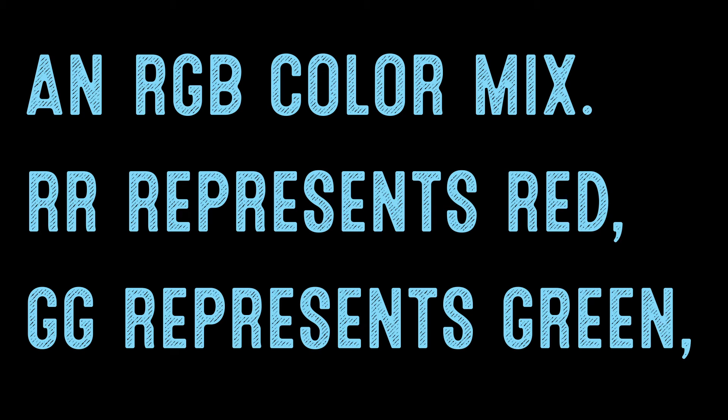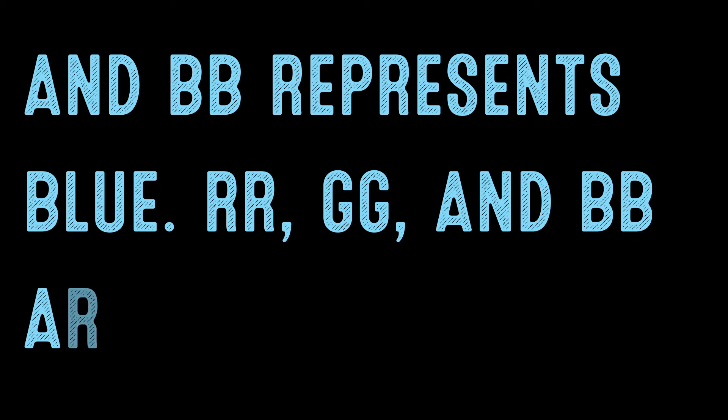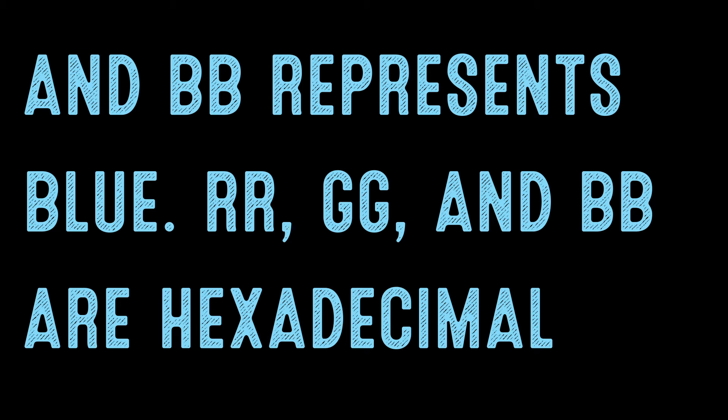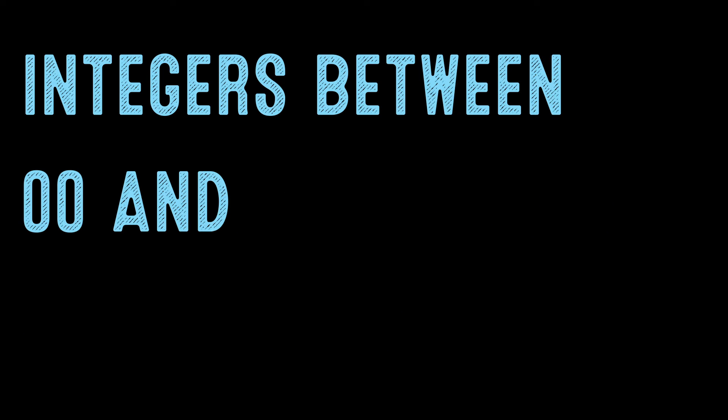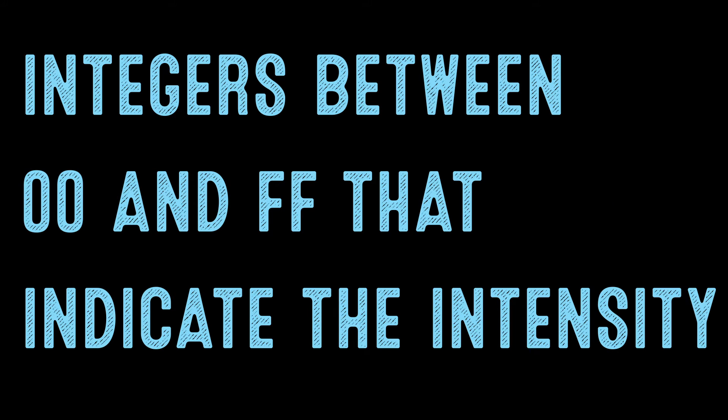RR represents red, GG represents green, and BB represents blue. RR, GG, and BB are hexadecimal integers between 00 and FF that indicate the intensity of the color.